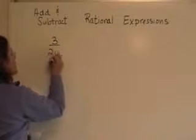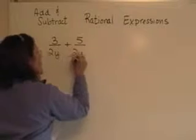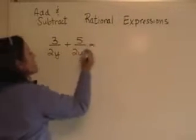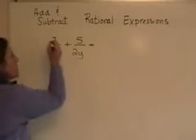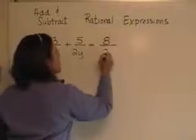The first problem I'd like to look at is 3 over 2y plus 5 over 2y. Again, these two fractions have common denominators, and when that's the case, you just go ahead and add the numerators. So 3 plus 5 gives us 8 over 2y.